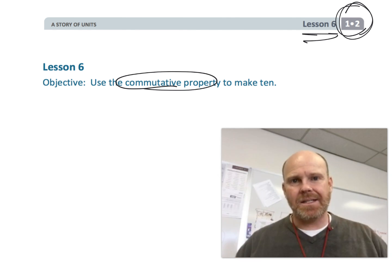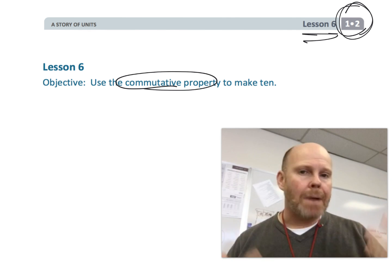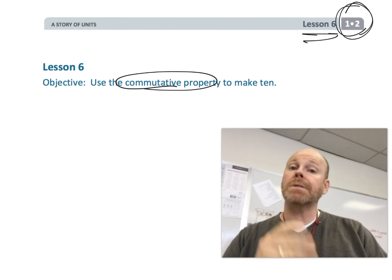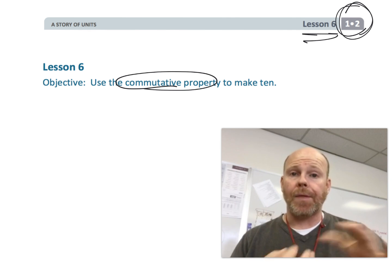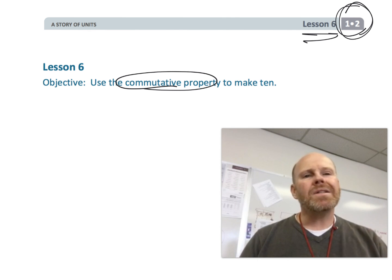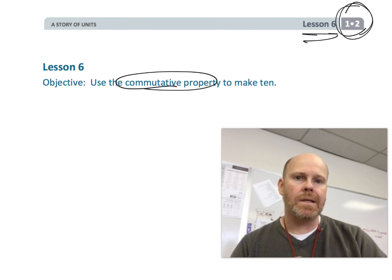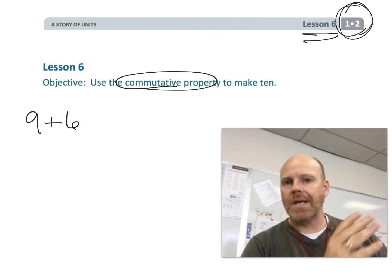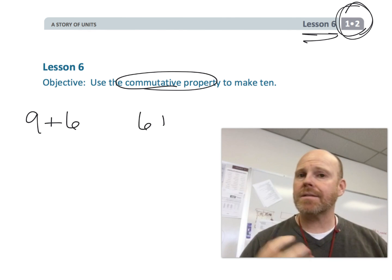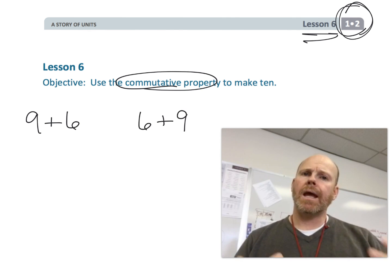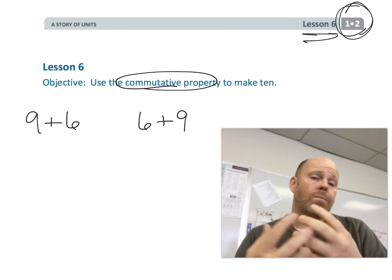We want students to know that 9 plus 6 is going to give us the same answer as 6 plus 9. That's the commutative property, and that's important because even knowing that 6 plus 9 and 9 plus 6 are the same and give us the same answer.